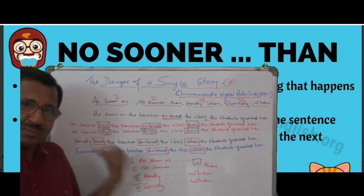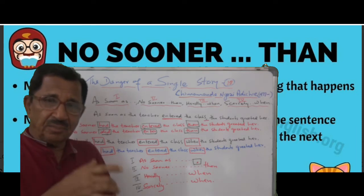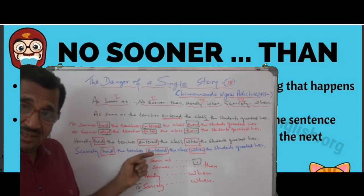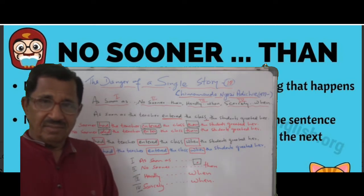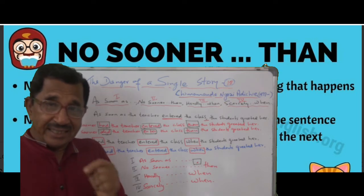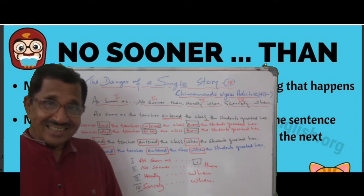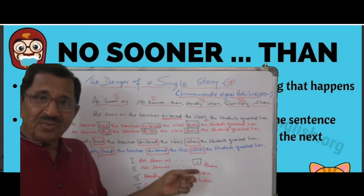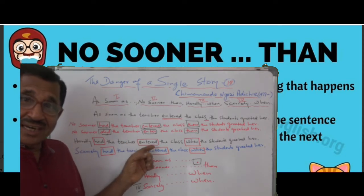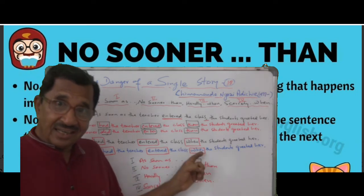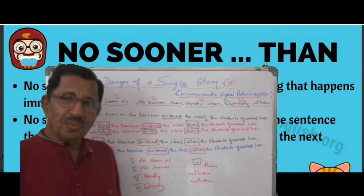The next possibility is you can insert 'do.' Since it is past tense, 'did.' So: 'No sooner did the teacher enter the class, than the students greeted her.' Because 'did enter' equals 'entered.' Similarly: 'went' equals 'did go,' 'ate' equals 'did eat,' 'sang' equals 'did sing.' So here, because we need an auxiliary immediately after 'no sooner,' you use: 'No sooner did the teacher enter the class, that the students greeted her.' Both possibilities are there.